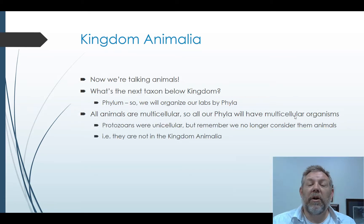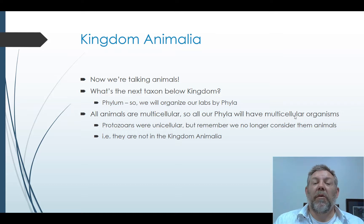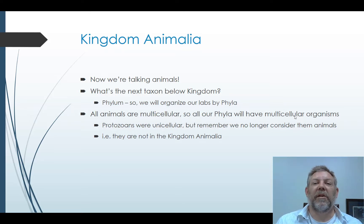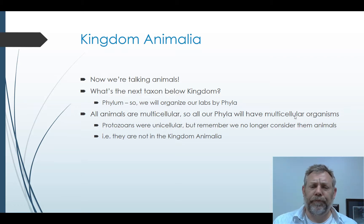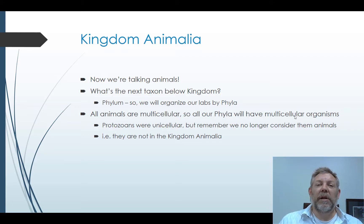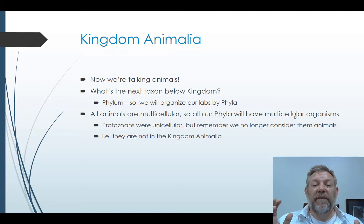So now we are talking animals. You remember last week we talked about protozoans — they were single-celled, eukaryotic, had mobility, and sometimes ingested their food, but they're not considered animals. They don't have a close common ancestor with the rest of the animals. Now we're going to start talking about things in the kingdom Animalia. Think about your taxa — the next taxon below a kingdom is the phylum, and that's how we're going to organize the labs.